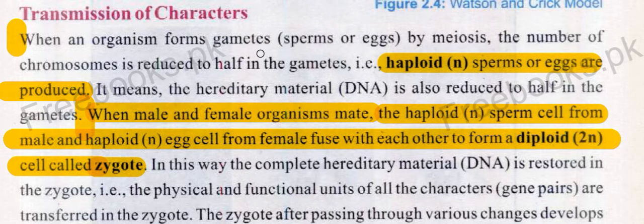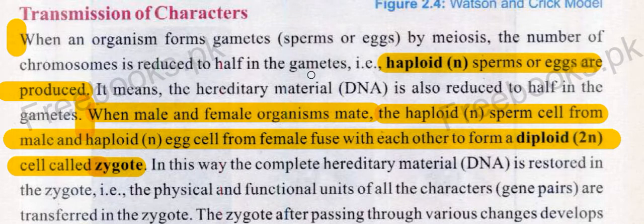When an organism forms gametes — that is, when an organism produces sperm or egg cells — through meiosis, the number of chromosomes is reduced to half in the gametes. Haploid sperm or egg cells are produced, meaning the hereditary material is also reduced to half in the gametes.